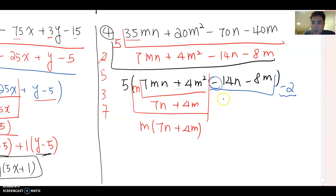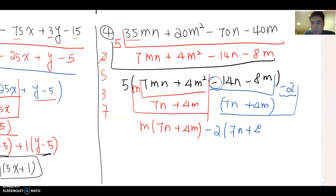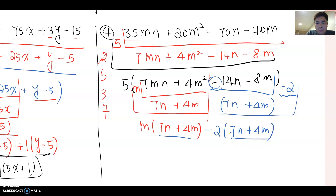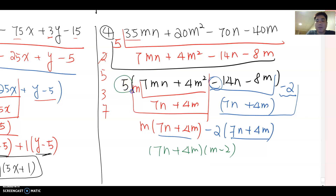Factoring by negative two switches the signs, so it comes out as (7n plus 4m). Cover with parentheses and write the multiplication: negative two times (7n plus 4m). Now do you see a common factor? Yes — (7n plus 4m) is the common factor, so the answer becomes (7n plus 4m)(m minus 2). Don't forget we factored by five before, so the final answer is 5(7n plus 4m)(m minus 2).